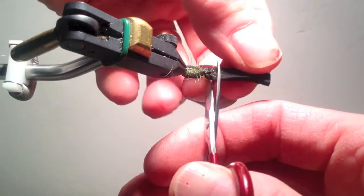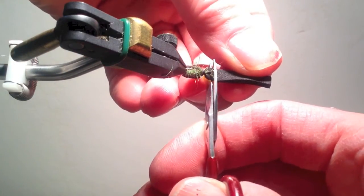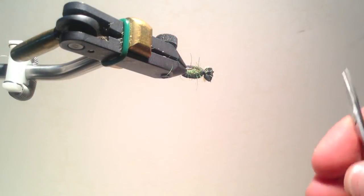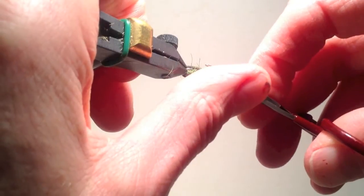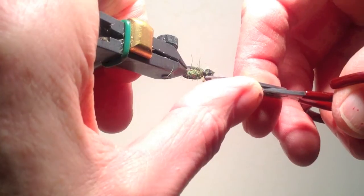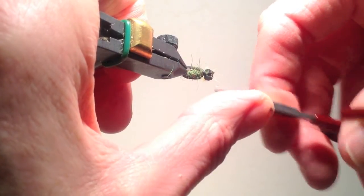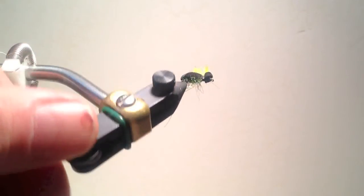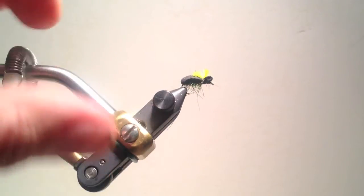I commonly turn it upside down so I can cut it even with the eye of the hook, and then trim the head to match what I envision a beetle to look like. And that's the finished, very simple foam beetle.